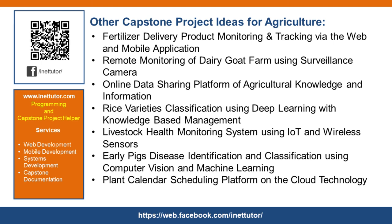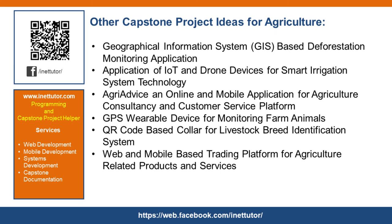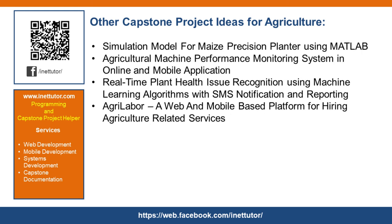Early pigs disease identification and classification using computer vision and machine learning. Plant calendar scheduling platform on cloud technology. Geographical information system, GIS, based deforestation monitoring application. Application of IoT and drone devices for smart irrigation system technology. Agri-advice, an online and mobile application for agriculture consultancy and customer service platform. GPS wearable device for monitoring farm animals. QR code-based collar for livestock breed identification system. Web and mobile-based trading platform for agriculture-related products and services. Simulation model for maze precision planner using MATLAB. Agricultural machine performance monitoring system in online and mobile application. Real-time plant health issue recognition using machine learning algorithms with SMS notification and reporting. Agri-labor, a web and mobile-based platform for hiring agriculture-related services.